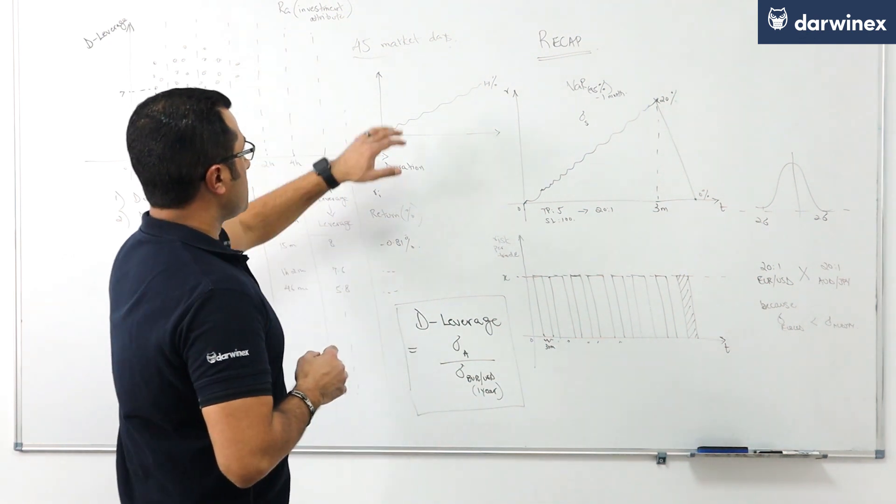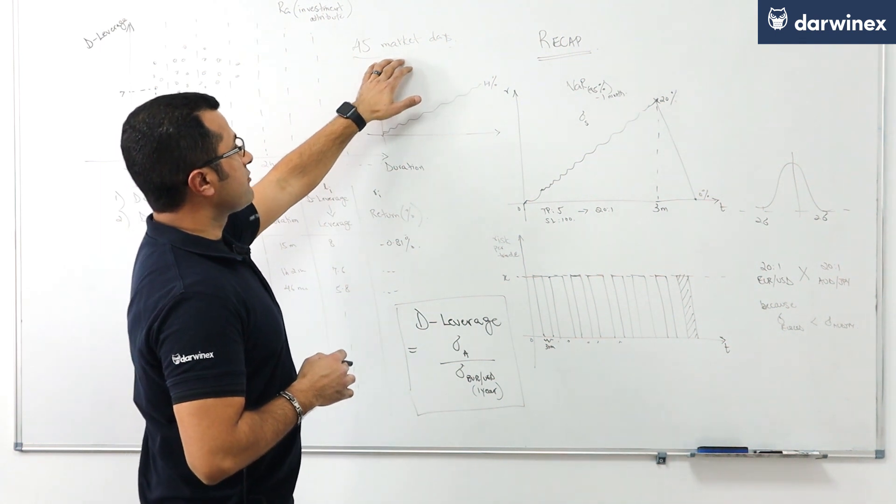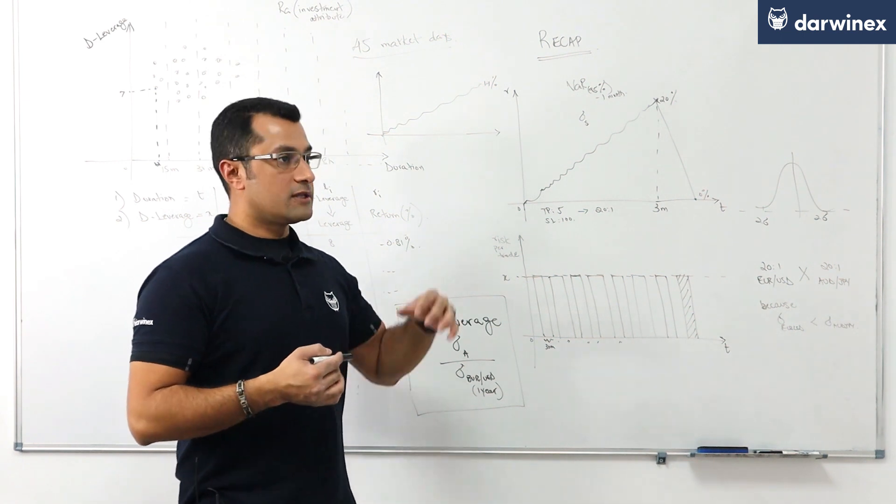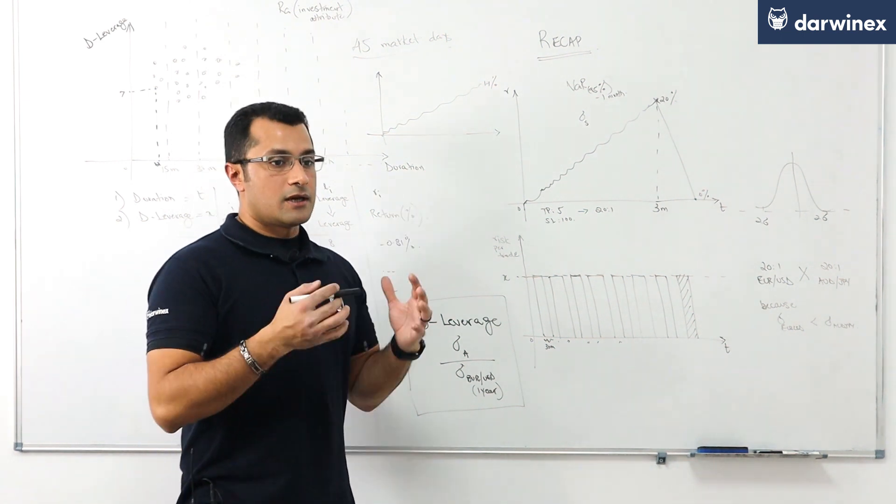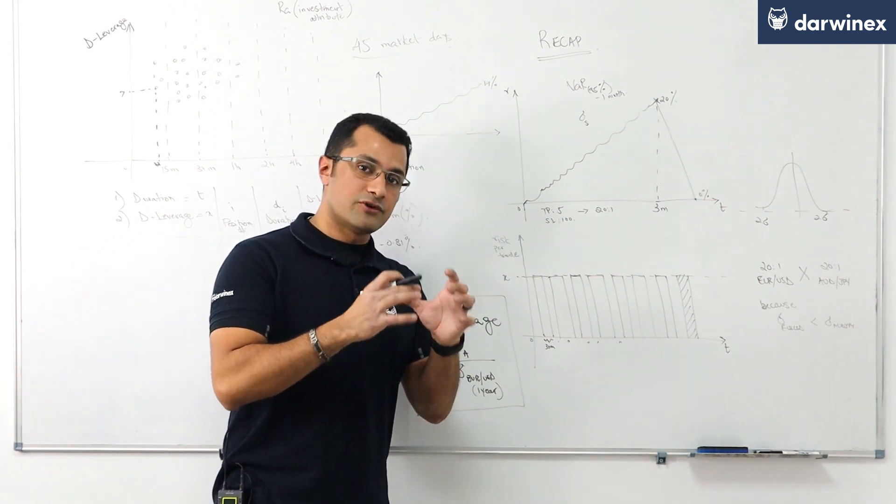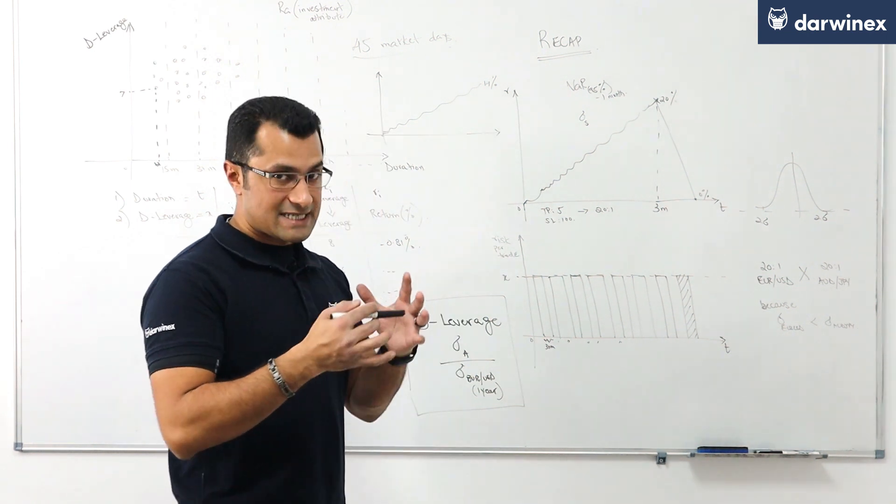if you recall we are using a reference period of 45 market days which by the way is a proprietary decision at DarwinX as we believe from our research that the last 45 market days worth of risk-taking behavior is representative of the most recent risk profile of the trader where it is at this point in time